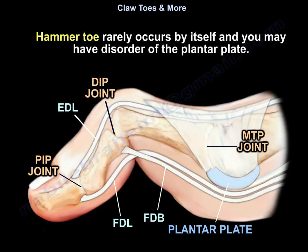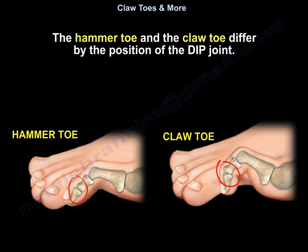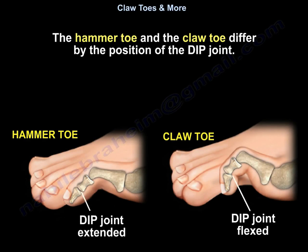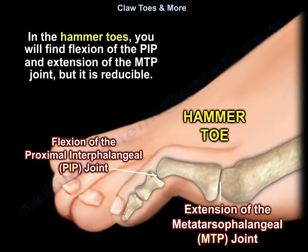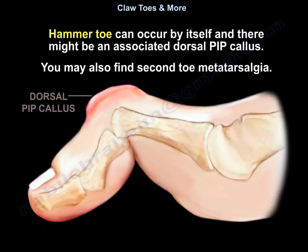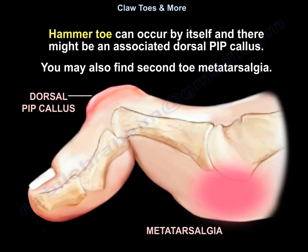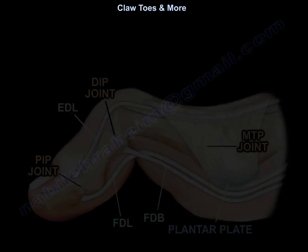The hammer toe rarely occurs by itself; you may have disorder of the plantar plate. The hammer toe and claw toe differ by the position of the DIP joint: the DIP is extended in hammer toe and it is flexed in claw toe. In hammer toe, you will find flexion of the PIP and extension of the MTP joint, but it is reducible. There might be dorsal PIP callus and you may find second toe metatarsalgia. The condition of hammer toe can be flexible or rigid.